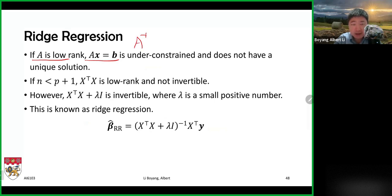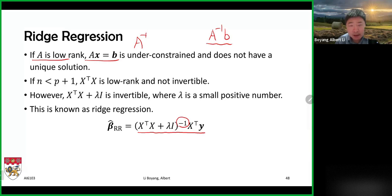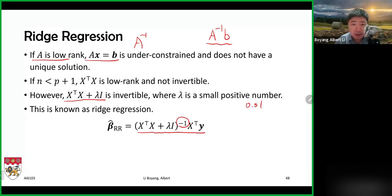There's no way to find a unique solution via A-inverse times b. So how do we make the equation work? The solution is to find a new matrix: X-transpose X plus lambda times I, where lambda is a very small positive value — like 0.01 — added onto the diagonals of X-transpose X.